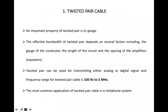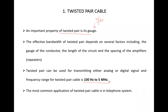Cables are twisted, and the thickness of the cable is called the gauge. The bandwidth of the cable depends on the gauge — a higher gauge means more bandwidth and less susceptibility towards noise, meaning better performance. The frequency of twisted pair cable is between 100 Hz to 5 MHz. The most common applications are telephone networks and local area networks (LAN).